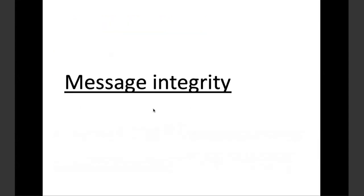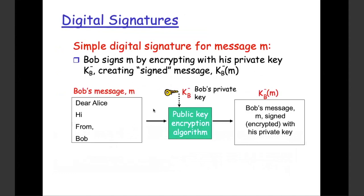Now let's talk about message integrity and digital signatures. With asymmetric key, there is a key used to encrypt the message. Alice uses Bob's public key to encrypt the message, and Bob uses his private key. But in digital signatures, we have to check the authenticity of Bob. So Bob will sign a message with his private key and then send it over.